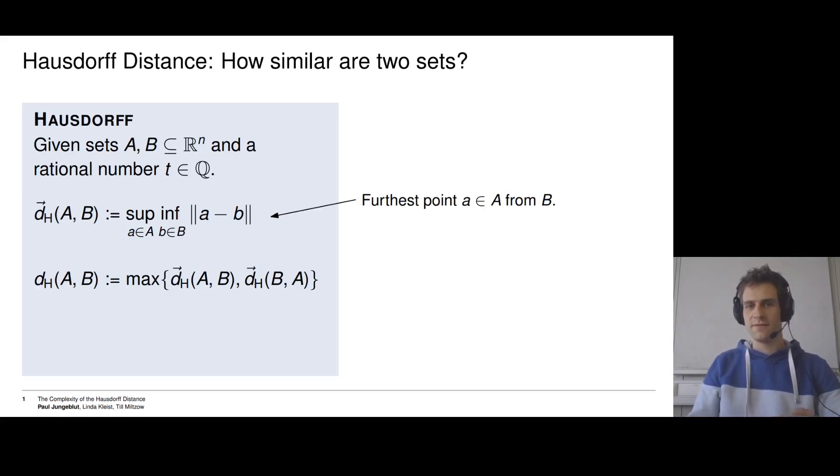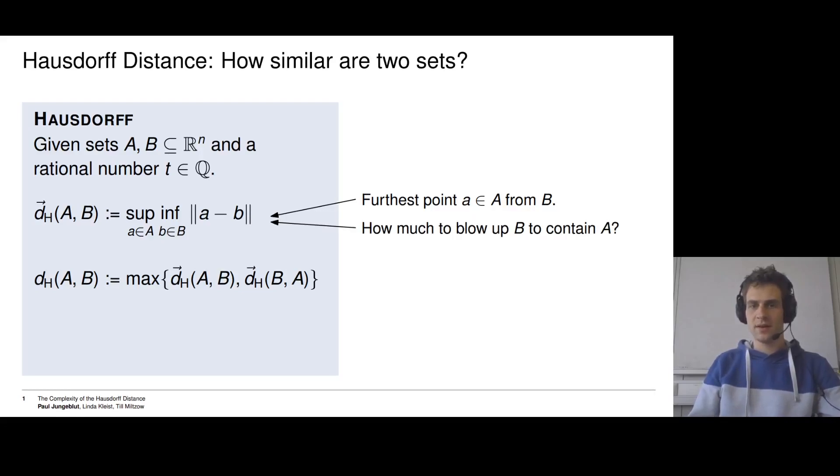The directed Hausdorff distance from A to B is defined via this complicated looking formula. But all it says is: what is the furthest point in A from B? The supremum maximizes the choice over the point a in A to find the closest one b in B. Equally, we can think of it as how much do we have to blow up the set B until it contains A, and by blow up I mean uniformly in all directions.